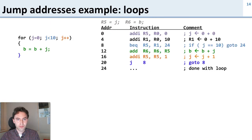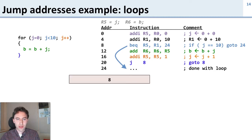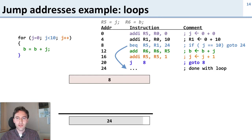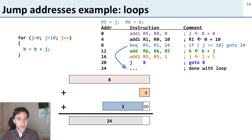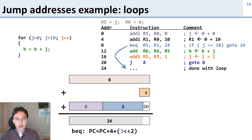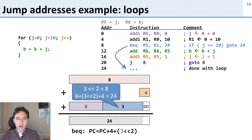Let's take a look at a loop example. We have two branches, and we'll look at the first one: branch equal, which exits the loop when we're done. For this branch instruction, the program counter starts at 8 and we want to get to 24. We know we always add 4, and we know our immediate is shifted two bits to the left, so we need to put in a 3 — sign-extended it's still 3 — and that gives us 24. The equation is: next PC = current PC + 4 + (3 shifted left 2). Three shifted left two is 8, so 8 + 4 + 8 = 24.